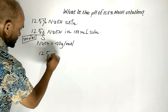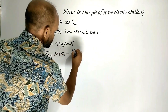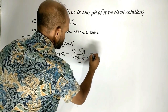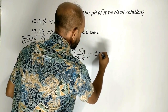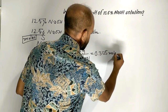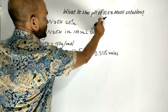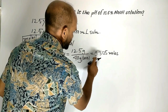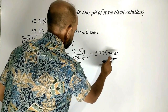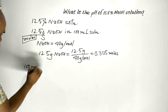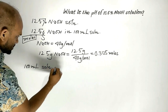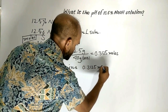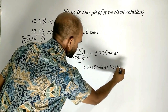12.5% sodium hydroxide is equal to 12.5 grams divided by 40 grams per mole, which equals 0.3125 moles. So 100 milliliter solution contains 0.3125 moles of sodium hydroxide.